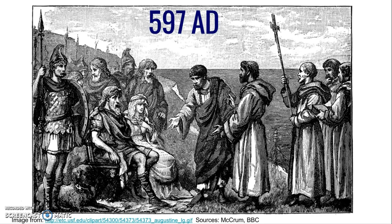In 597 AD, Augustine and about 50 monks from Rome brought Christianity to England. Along with Christianity, they also brought Latin. Sent to convert Britain by Pope Gregory, Augustine and his followers were received well. Before they came, artisans and traders from Rome had also spread the religion. As a result of these two forces, the conversion of Britain was slow but peaceful.